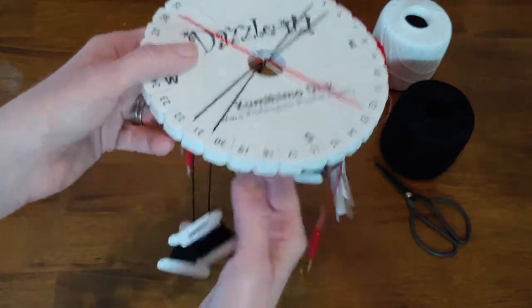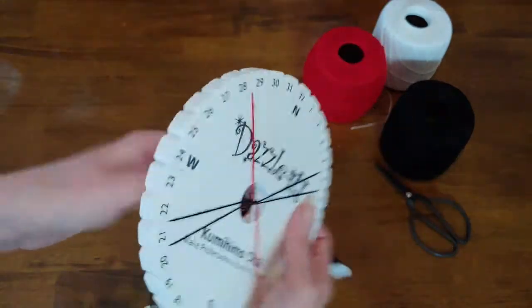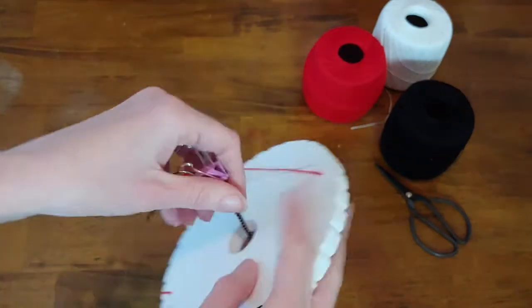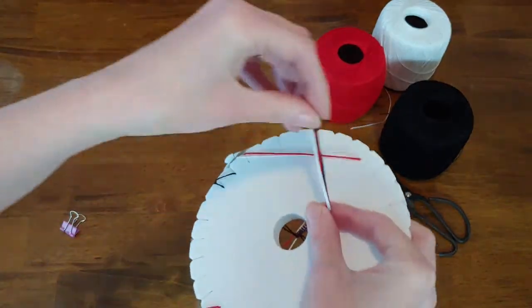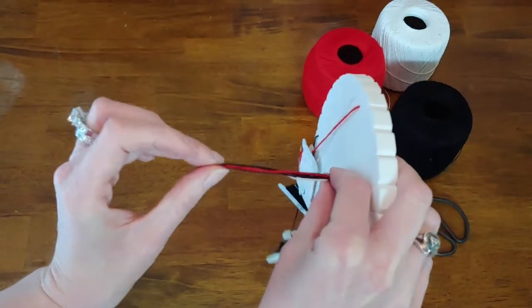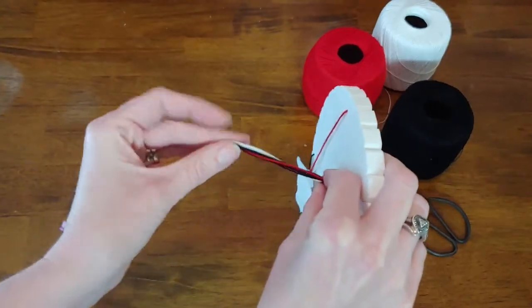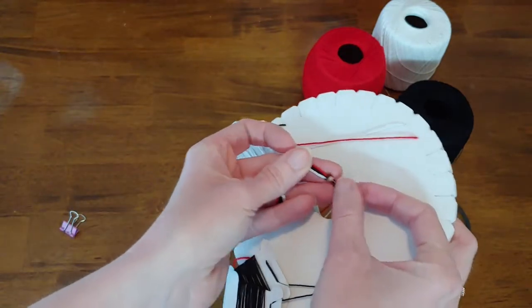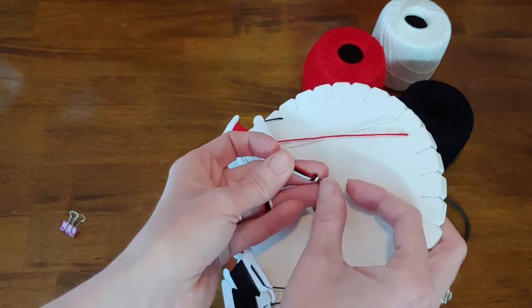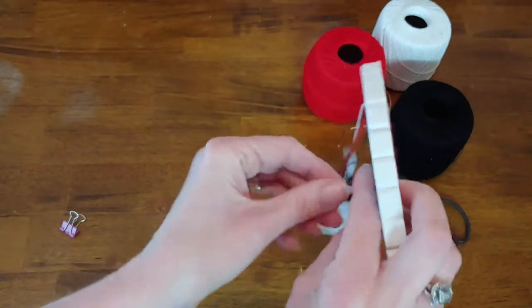What you want to do at the very beginning, once you pick out your colors, is you want to give yourself a couple of inches of thread, and then you want to put your knot in the thread. If you want to do two knots, that's fine. And once you do that...